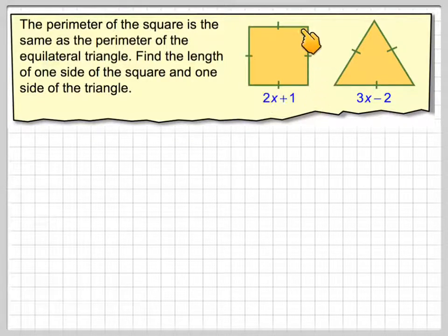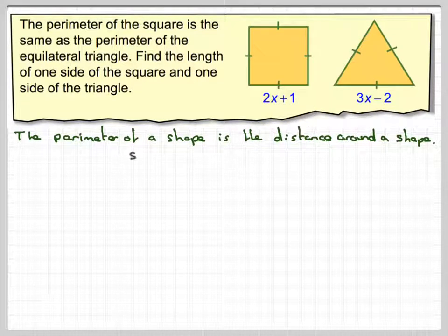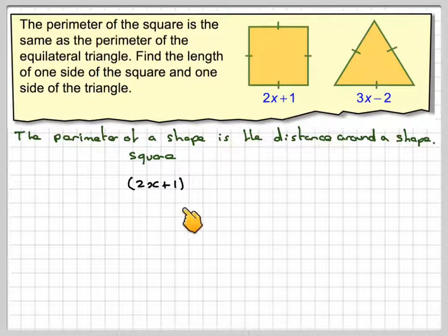So the thing about a square is all four sides are equal, and the perimeter is the distance around the outside of a shape. So if this side here is 2x plus 1, for the square we would need to multiply that by 4. So we take 2x plus 1, put it in brackets, and multiply it by 4.